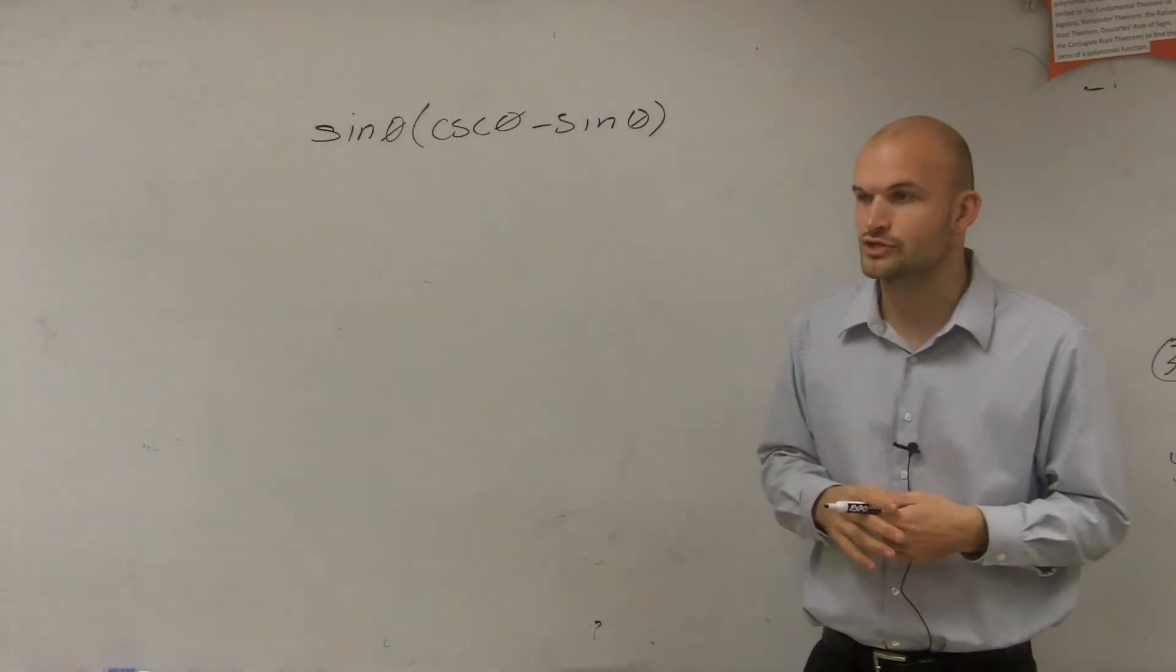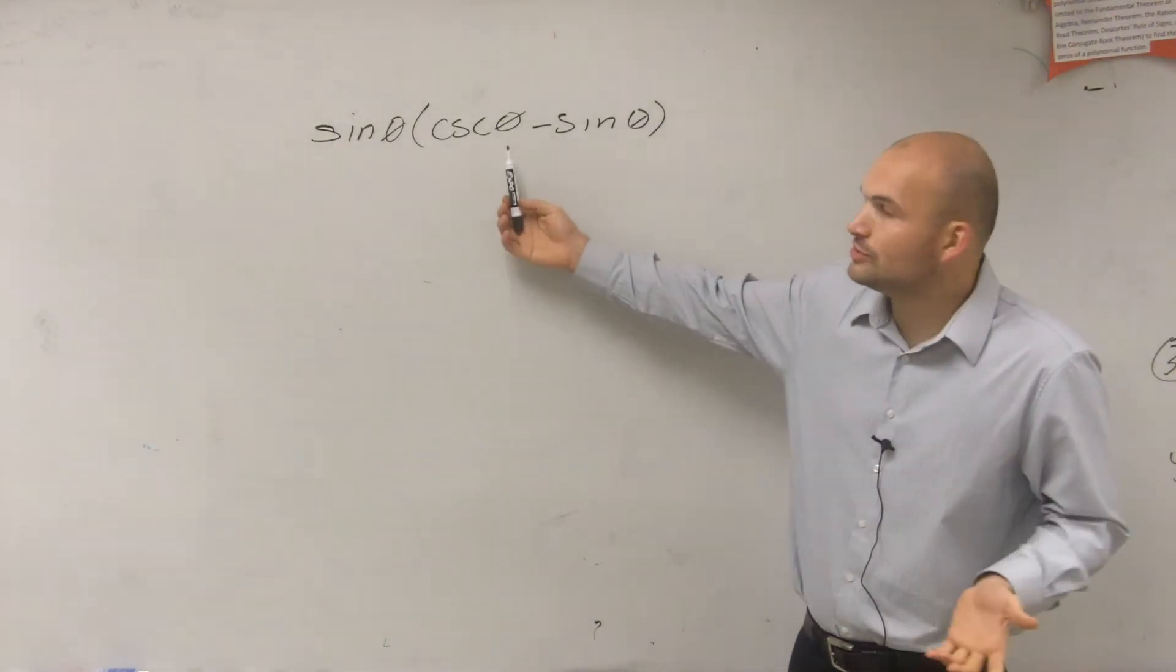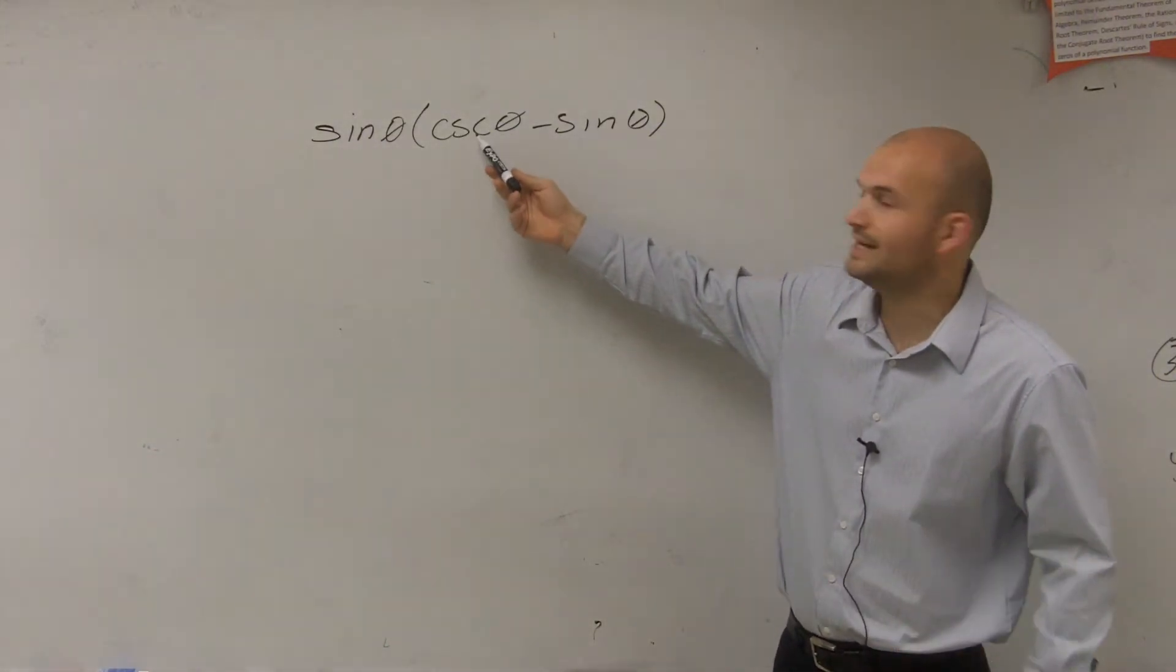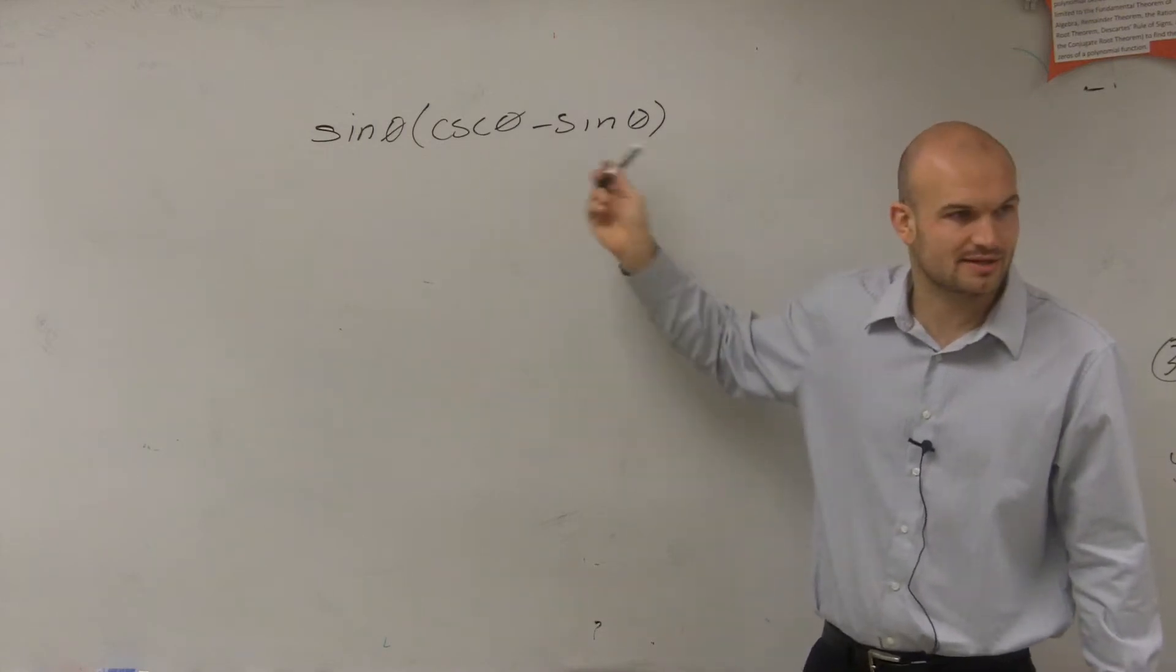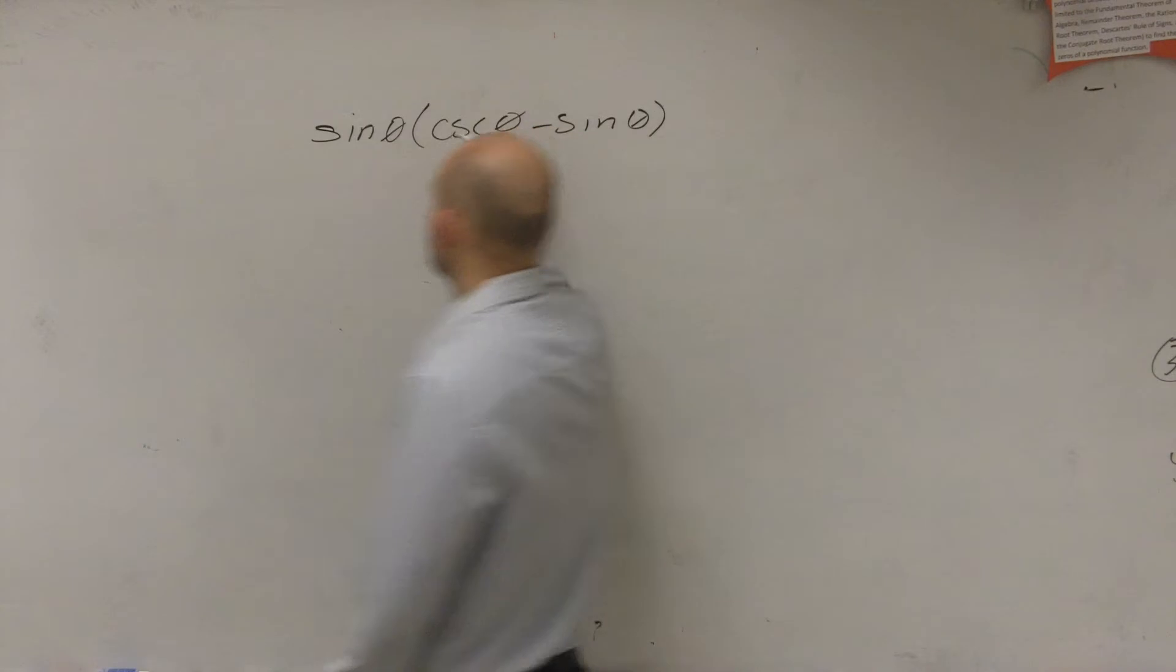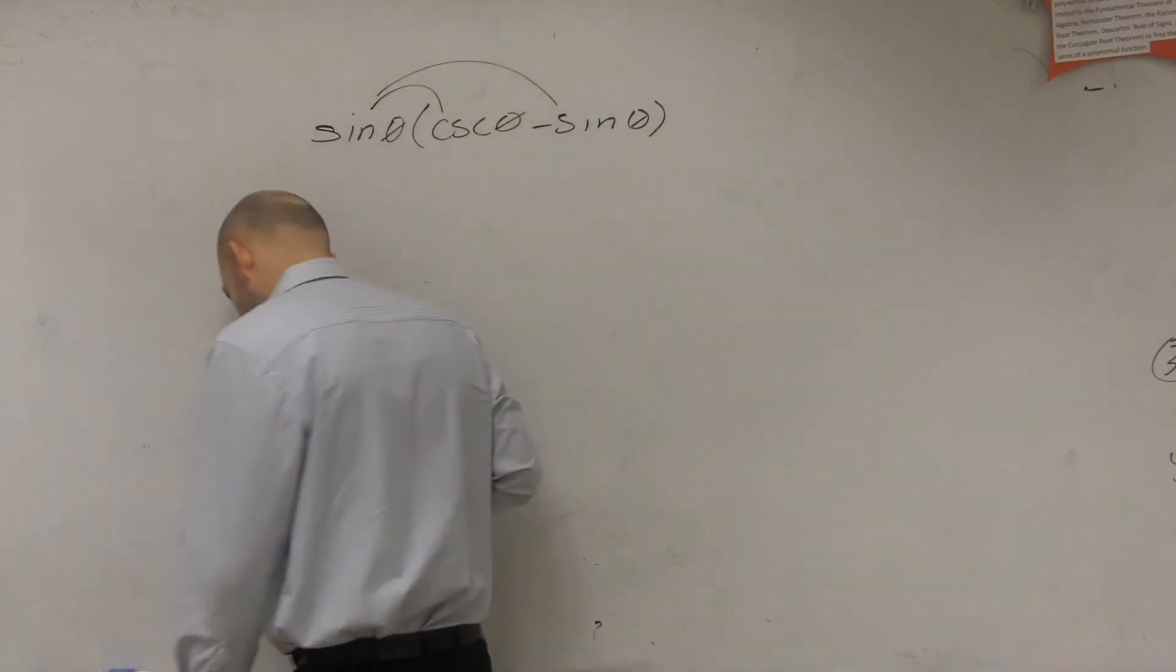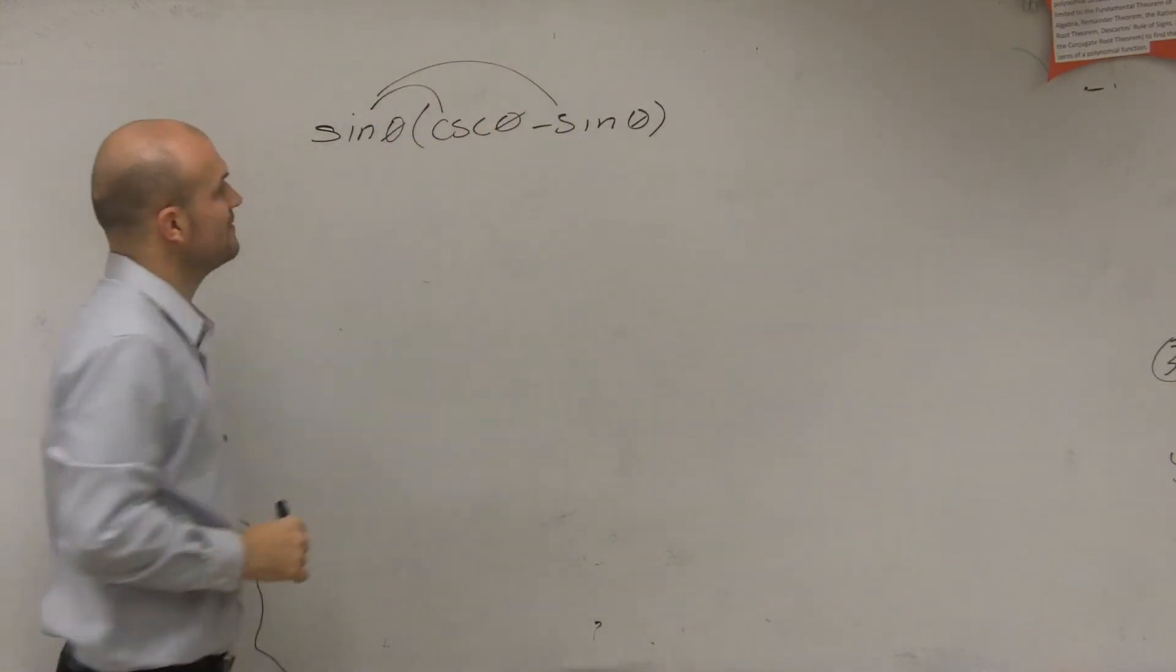And then let's see if we can use our trigonometric terms. The only thing we could use right now initially is converting cosecant to one over sine. But that's not going to help us because we can't subtract those two terms anyways. So let's apply a distributive property and simplify across and see what we get.